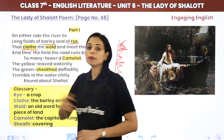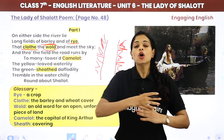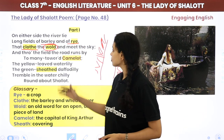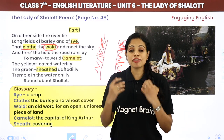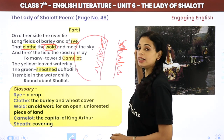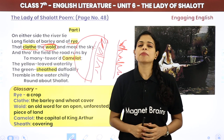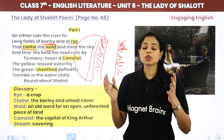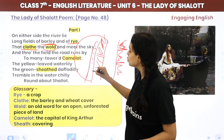'That clothed the world' means the crops have covered the entire open agricultural land like a cloth spread over it. 'Meet the sky' means the crops are so tall it feels like they touch the sky — of course crops cannot actually meet the sky, but they appear very tall. And through this field, a road runs by — this road goes to many-towered Camelot, which is the capital and legendary castle of King Arthur.